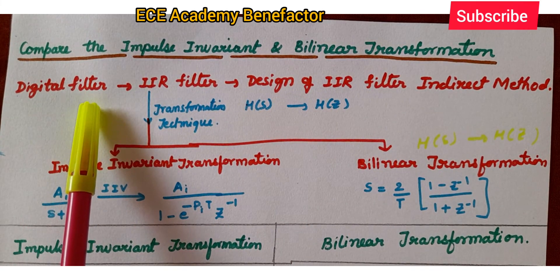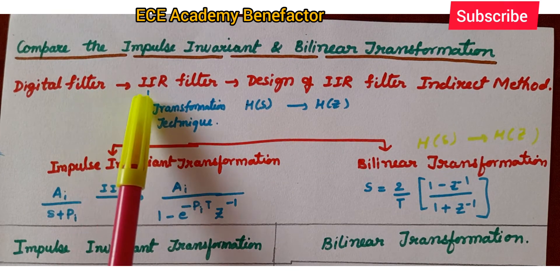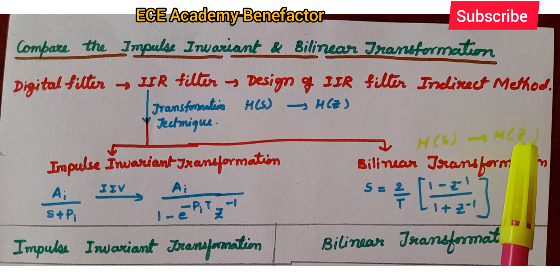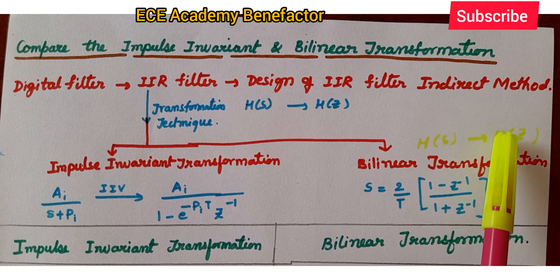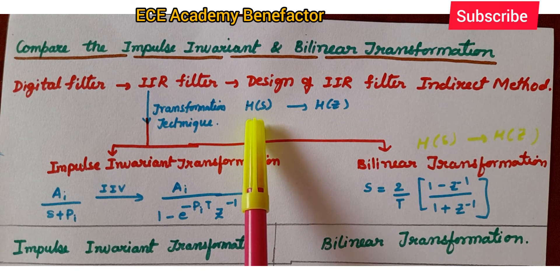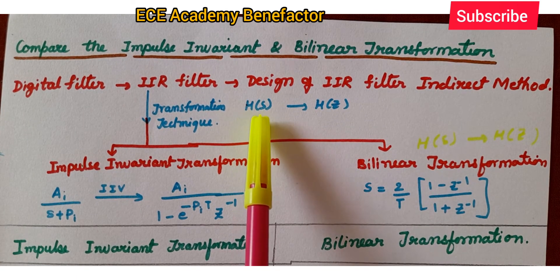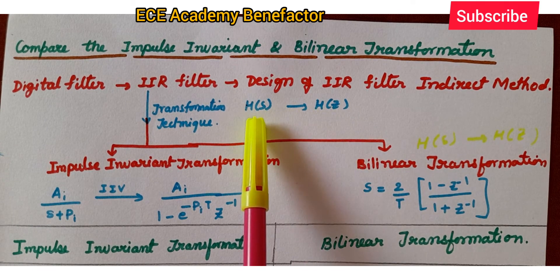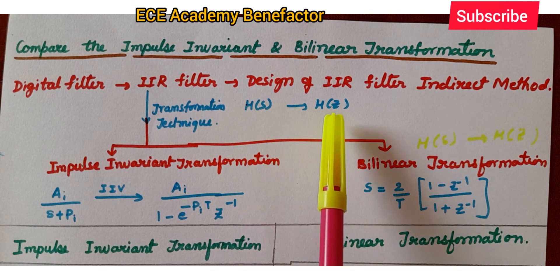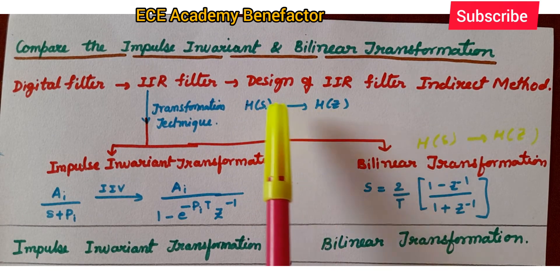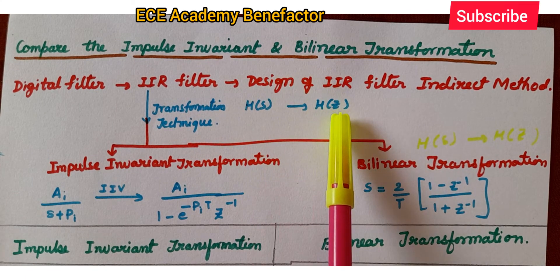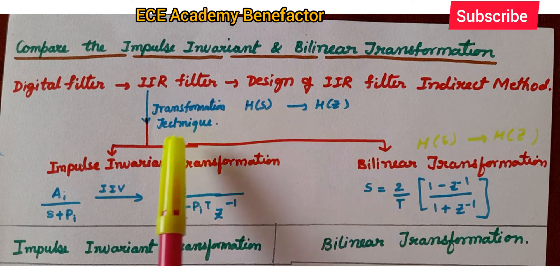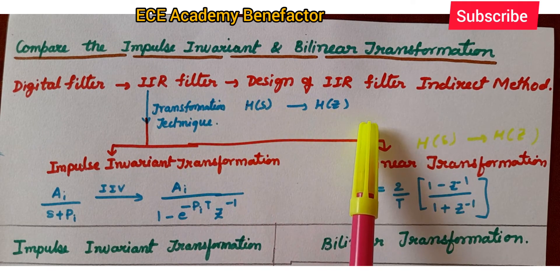Digital filters are of two types: FIR filter and IIR filter. We are doing the IIR filter topic. IIR filter design is an indirect method. Why is it indirect? Because first we have to find the transfer function H(S), which is the analog filter transfer function, and then we transform it to the digital filter. H(S) is the analog filter transfer function and H(Z) is the digital filter transfer function. First we design H(S) and then transform it to get H(Z), so we say the design of IIR filter is an indirect method.